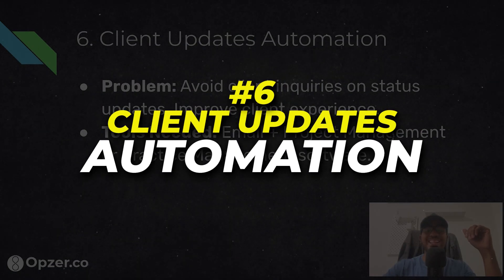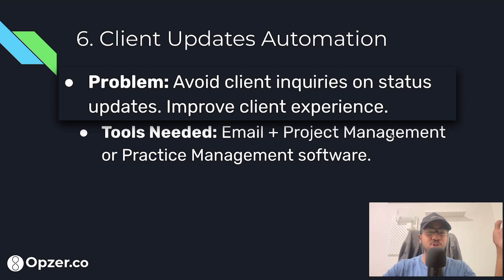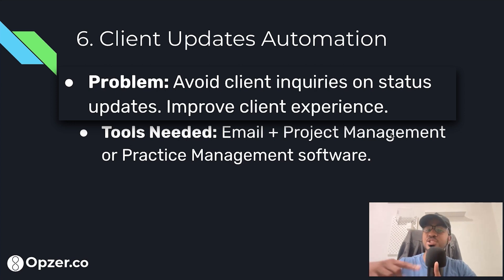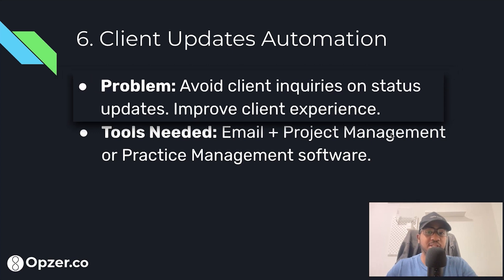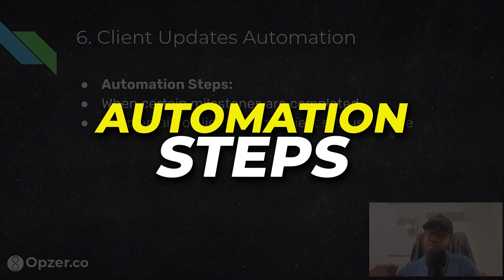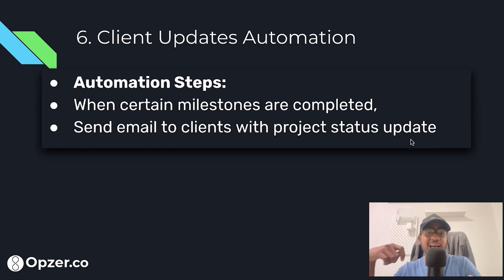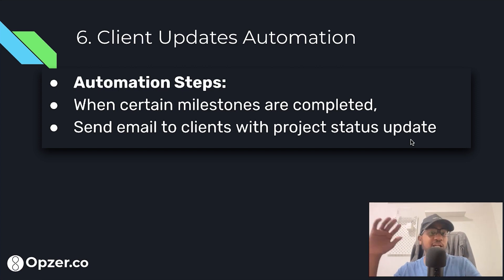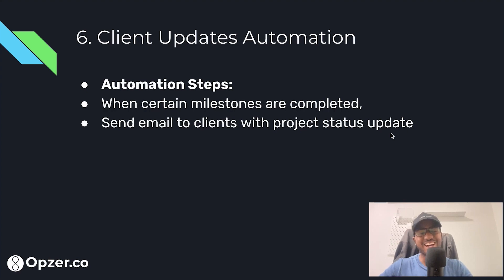Automation number six: client updates automation. Similar to the last one, but instead of messaging your team internally, you're messaging clients externally about project progress. This helps avoid clients having to reactively ask for status updates, and improves client experience so they stay with you longer. As certain milestones or tasks are completed in your practice management software, you automatically send the client a message: 'We just finished this stage of the project, we're moving on to the next — just wanted to keep you involved.'